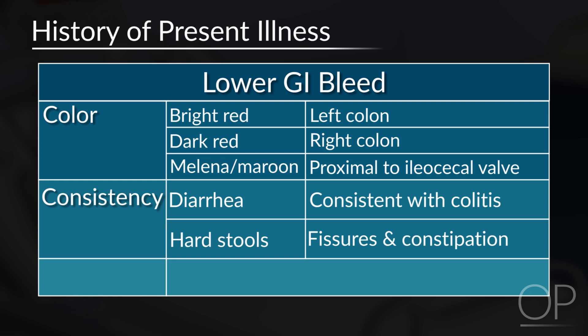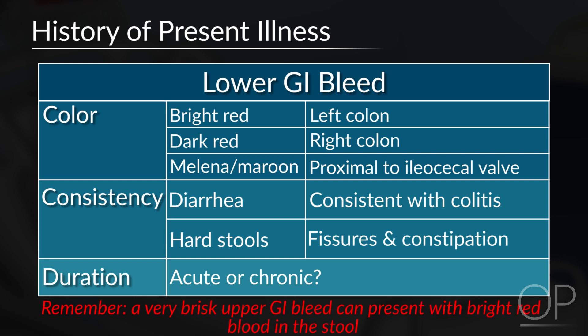You should always assess the duration of symptoms to see if there is an acute or chronic problem. Remember, a very brisk upper GI bleed can present with bright red blood in the stool.